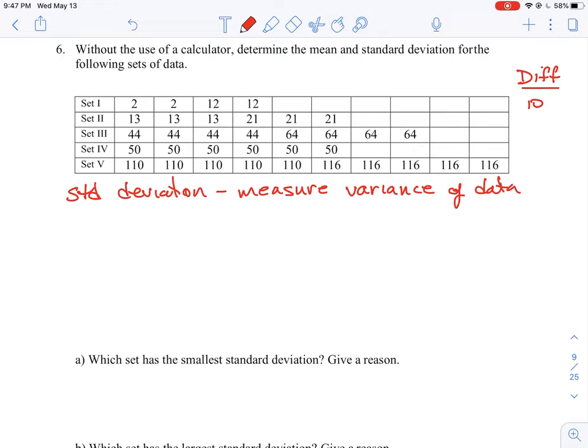For set three, it looks like our difference here is seven, and one extra is eight, 21 minus 13. For this one, our set of difference, our differences here is between 44 and 64, so that's 20. Set four, our differences are zero, and set five, our differences here are six.